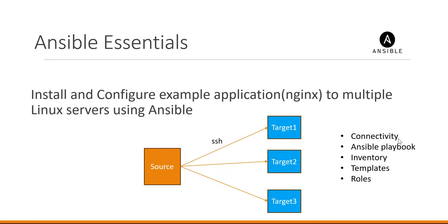So till now, we have set up connectivity successfully from source to all three target machines, written an Ansible playbook, written an inventory, and executed the playbook to install and configure the Nginx package in all the target machines. In the next video, we will see how to make a template for the index page of the Nginx server, and also how to make a role and use that role in the Ansible playbook.